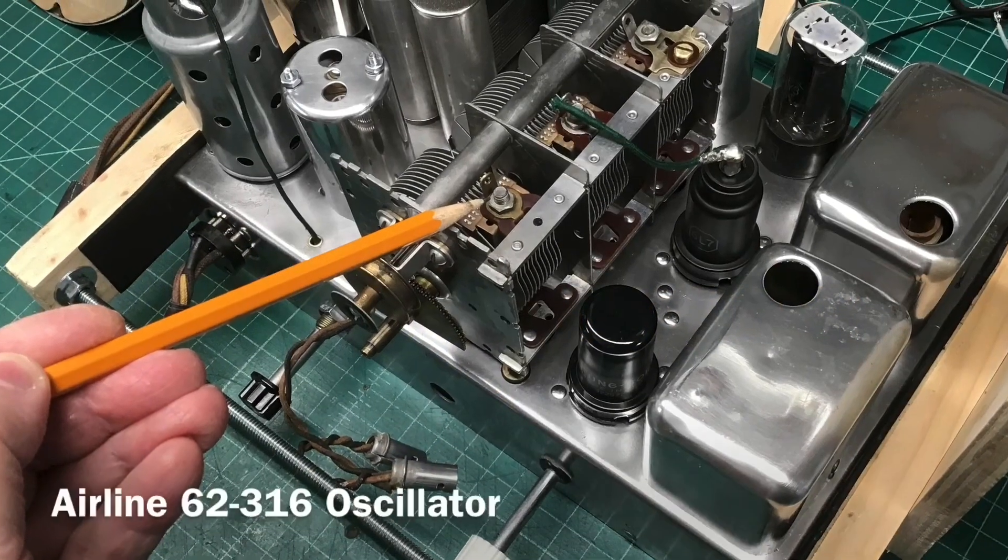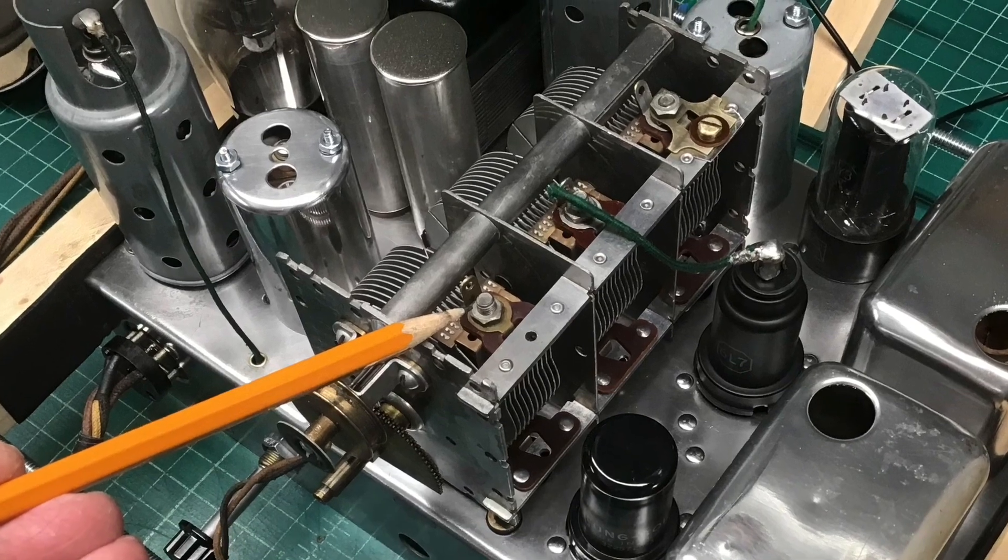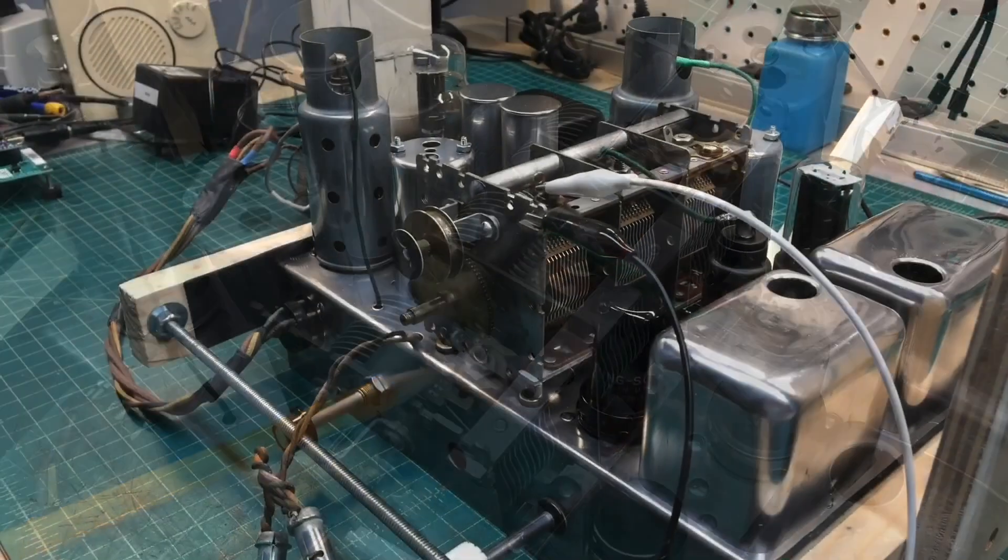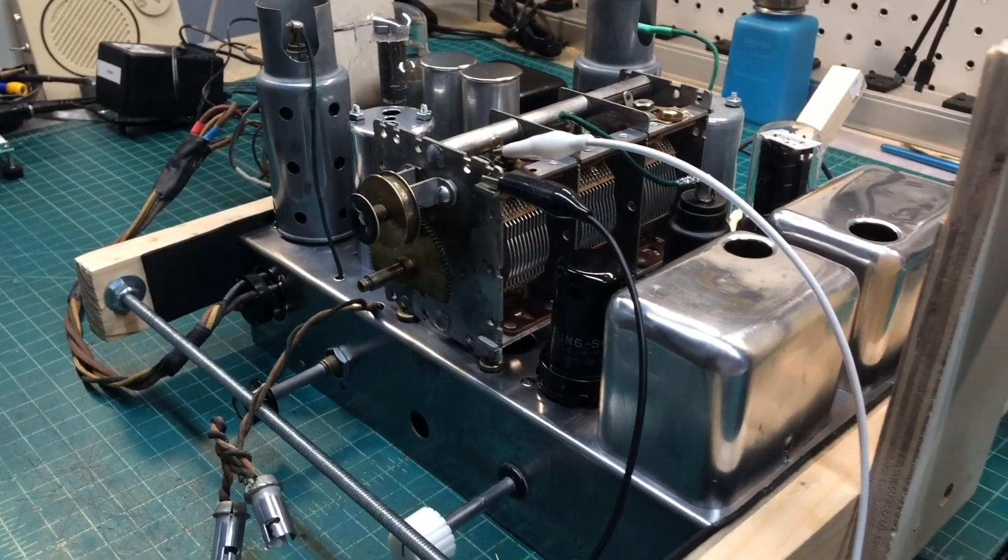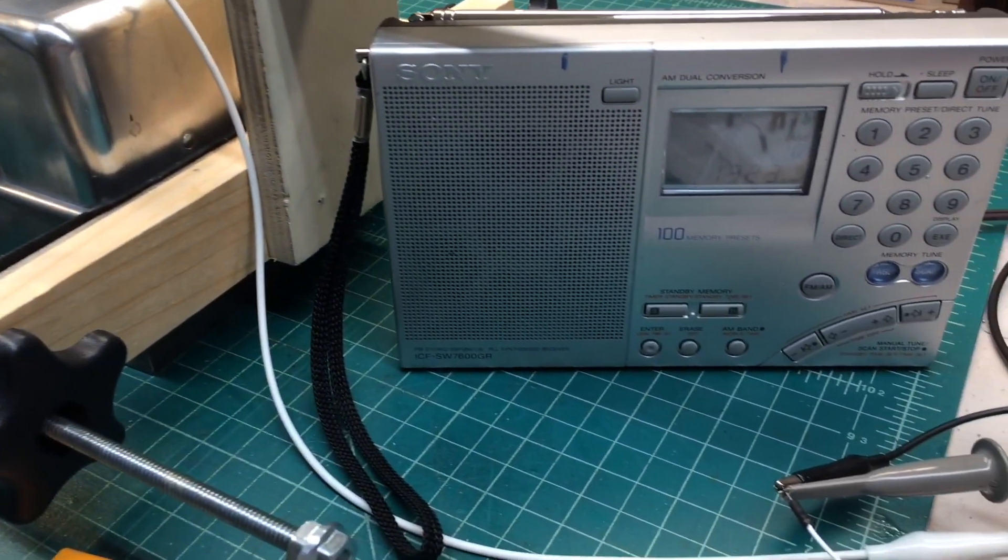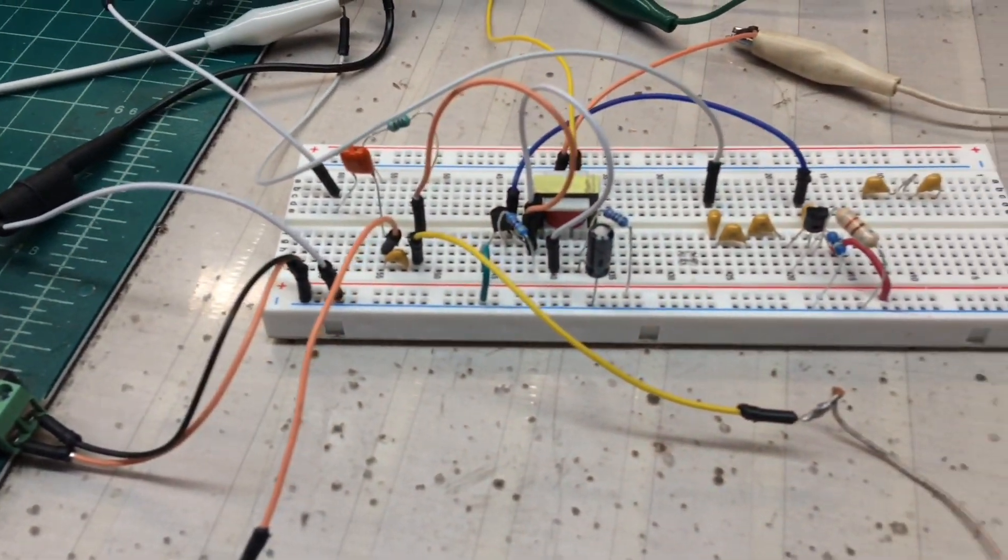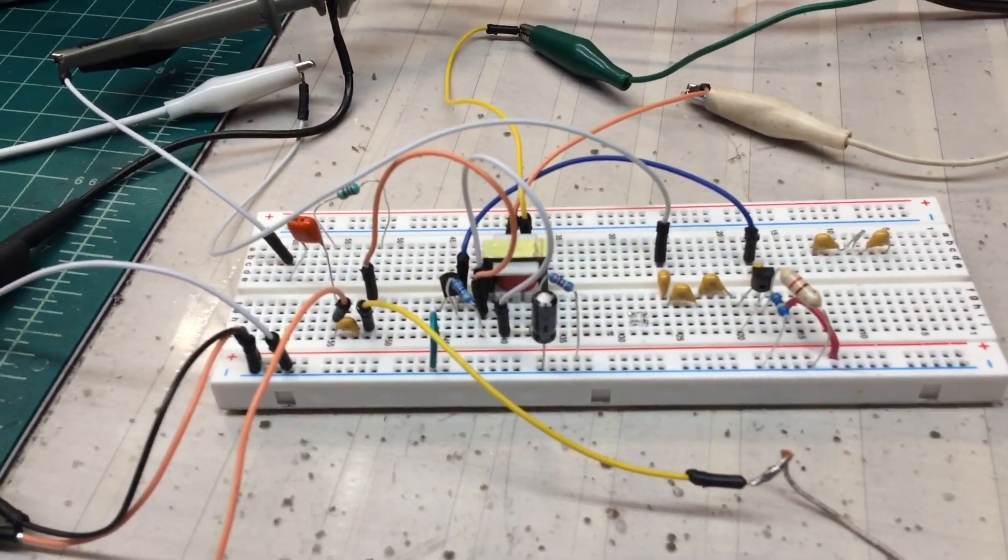A simple way to use your broadcast receiver: you can see in this case the airline 62316 coming off of the oscillator section, and I can take that signal, amplify it, and also modulate it and use it as a close proximity transmitter.